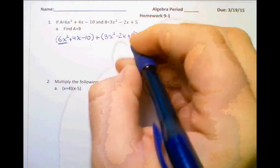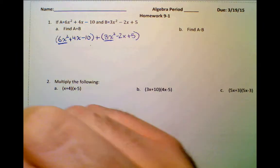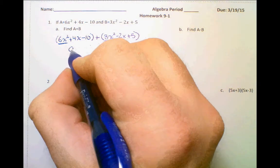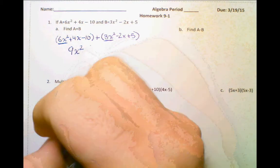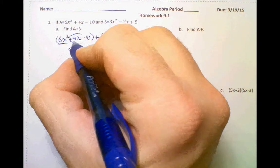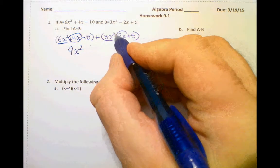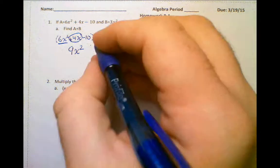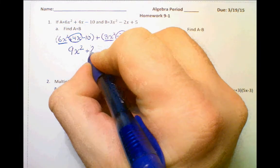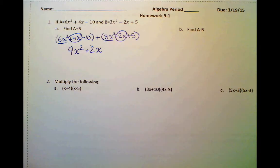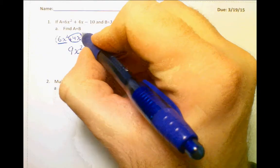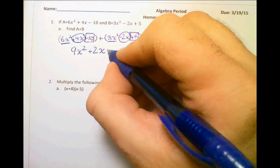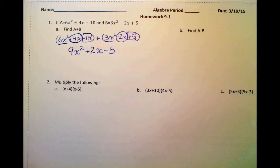I have 6x squared and 3x squared. Remember, we keep the x squared term and just add the coefficients. So 6 plus 3 is 9 — that would be 9x squared. Now for the x terms: plus 4x minus 2x gives us 4 minus 2, which is 2x. Finally, we have minus 10 plus 5, which gives us negative 5. And that will be your final answer.